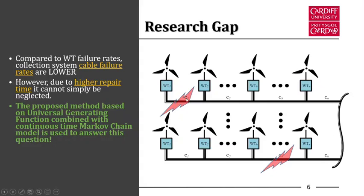For example, when a cable section fails while a wind turbine is operating, that wind turbine cannot export power. In another section, if K number of wind turbines are in healthy operation, due to the failure of a small cable section, all those wind turbines have to shut down. So there is a network dependency in this reliability evaluation.